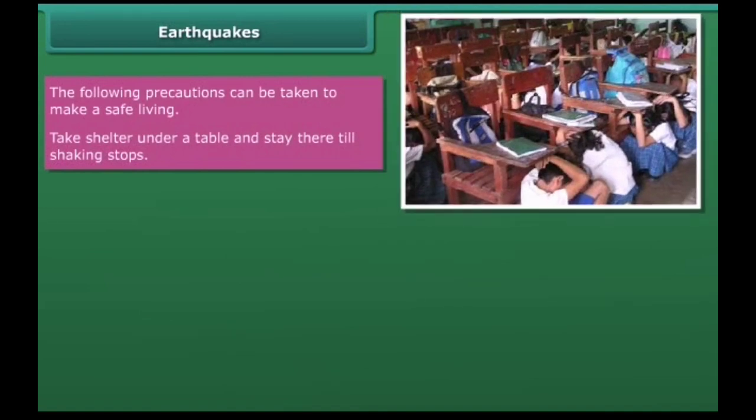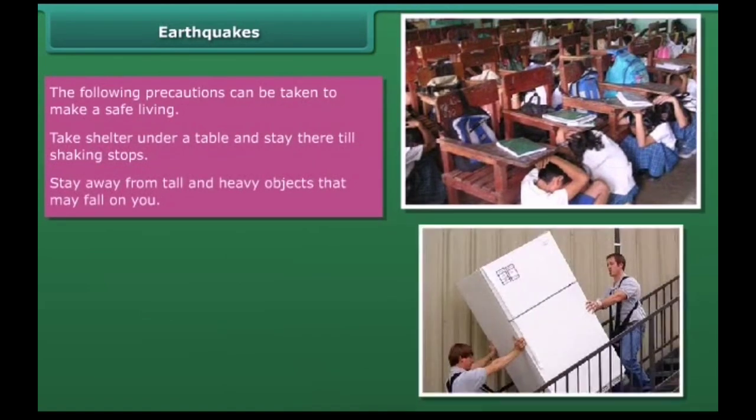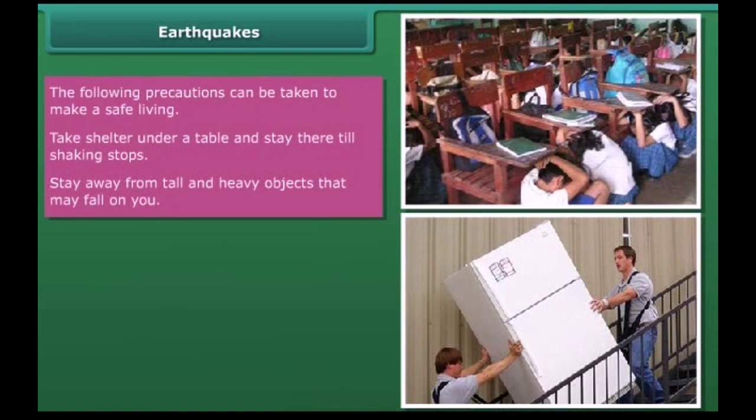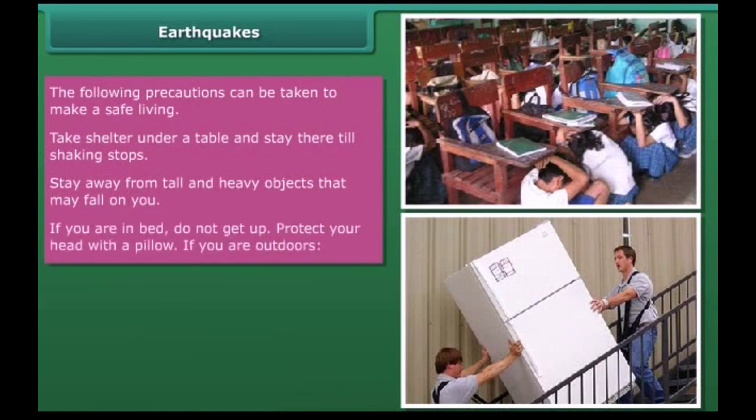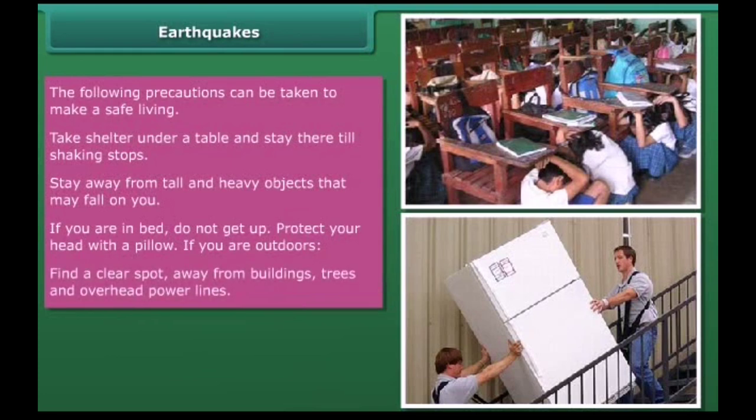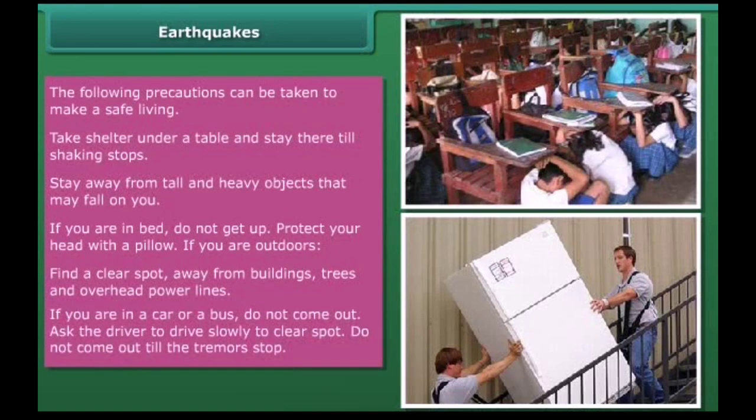The following precautions can be taken to make a safe living. If you are at home, take shelter under a table and stay there till shaking stops. Stay away from tall and heavy objects that may fall on you. If you are in bed, do not get up. Protect your head with a pillow. If you are outdoors, find a clear spot away from buildings, trees, and overhead power lines. If you are in a car or a bus, do not come out. Ask the driver to drive slowly to a clear spot. Do not come out till the tremors stop.